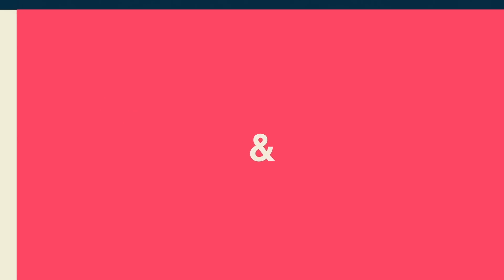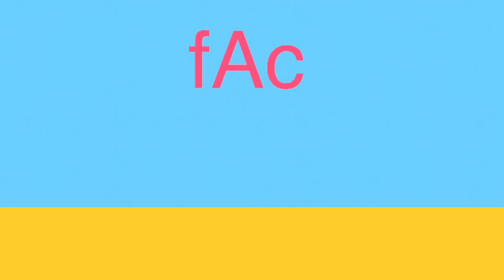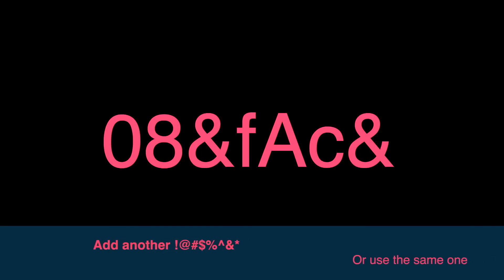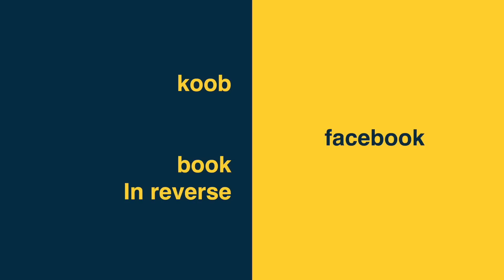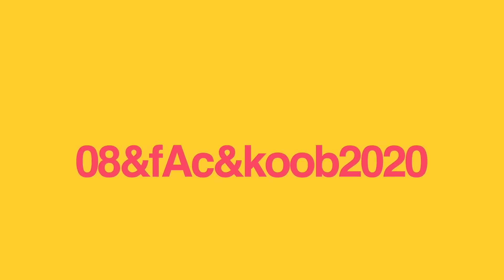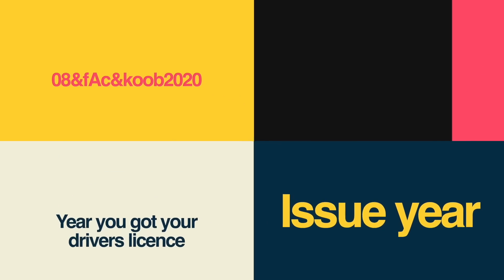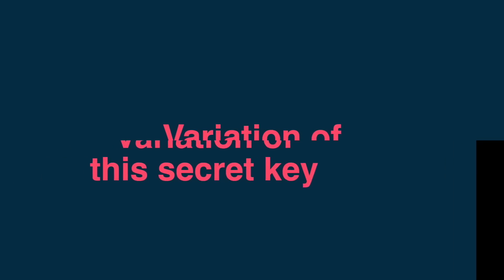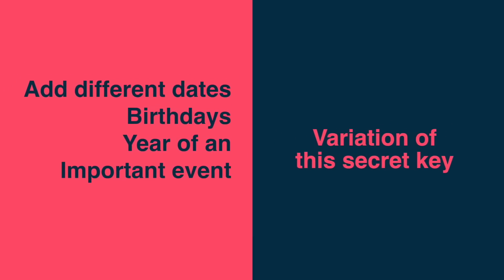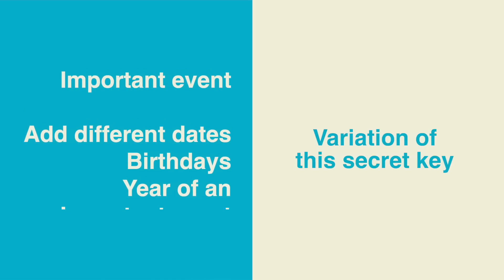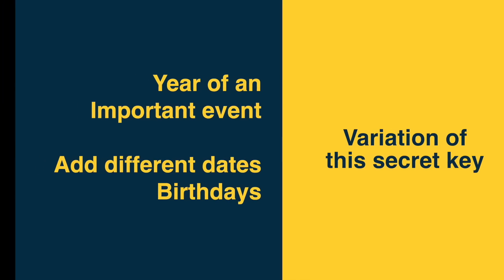For example, the first two characters of my passwords are generally the same. I pick a year important to me — like Monty's birth year, '08 — then throw in my preferred special character, the ampersand, so the password starts as '08&'. If I'm creating a password for Facebook, I take the first three letters and capitalize the second letter, so it becomes '08&fAc'. Then I add another special character and add the last four letters of the service name in reverse. If I need more numbers, I add the year I got my driver's license. Every one of my passwords is a variation of this secret key, and I've added variations over the years — like when my parents were born or the year I broke my ankle — to separate passwords for different channels.